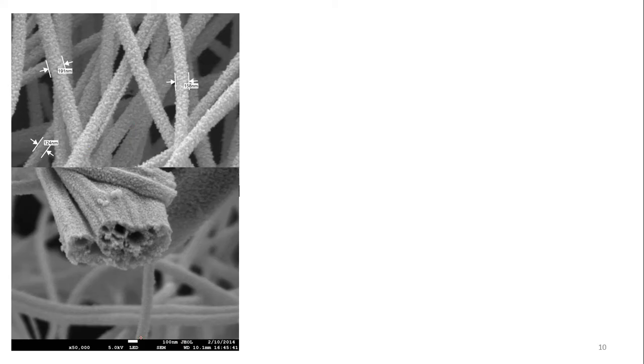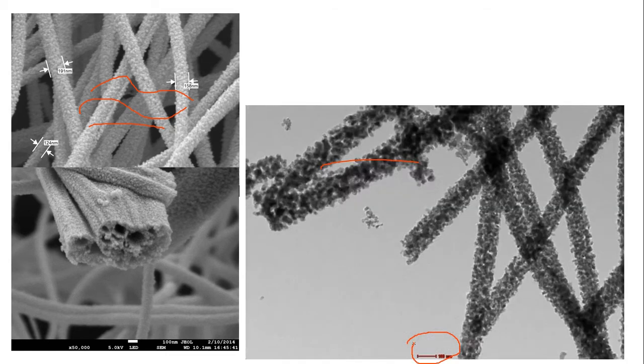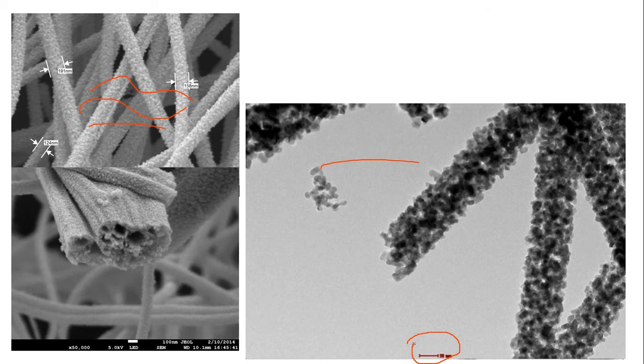Now, let us see transmission electron microscopic images. We just take a very thin sample of this material and focus. Here you can see that it is now at 200 nanometers, and this is now 100 nanometers. We further zoom here. Now, this is 50 nanometers.